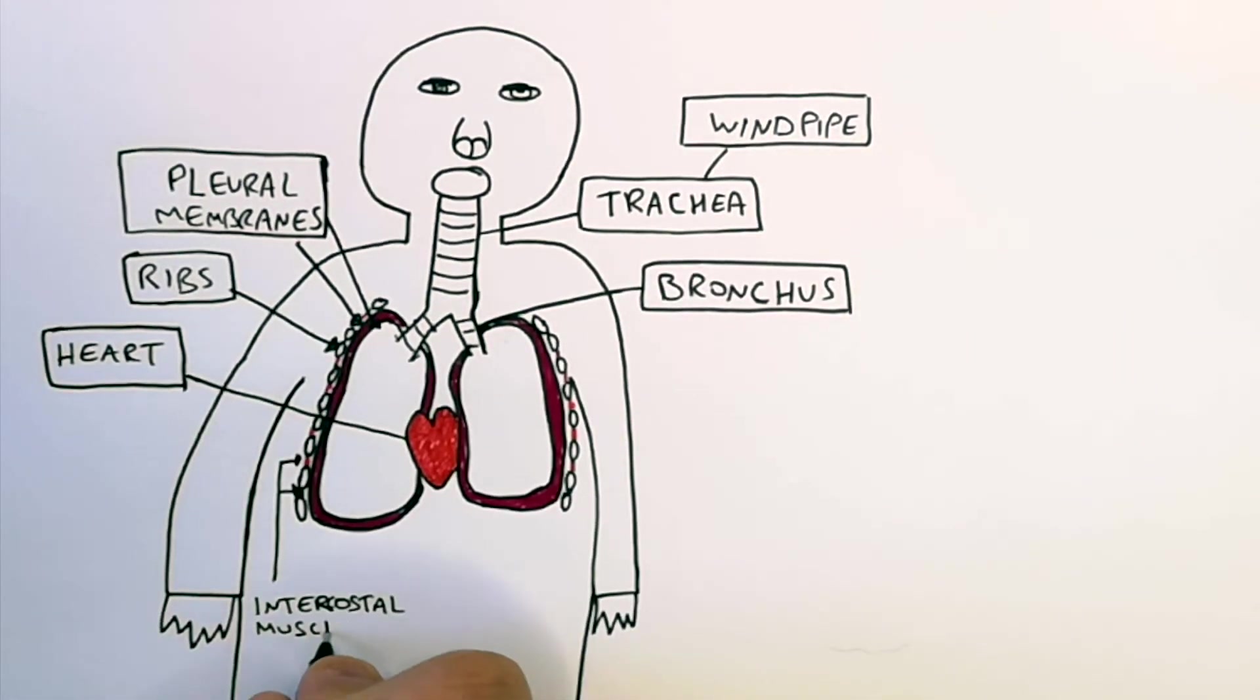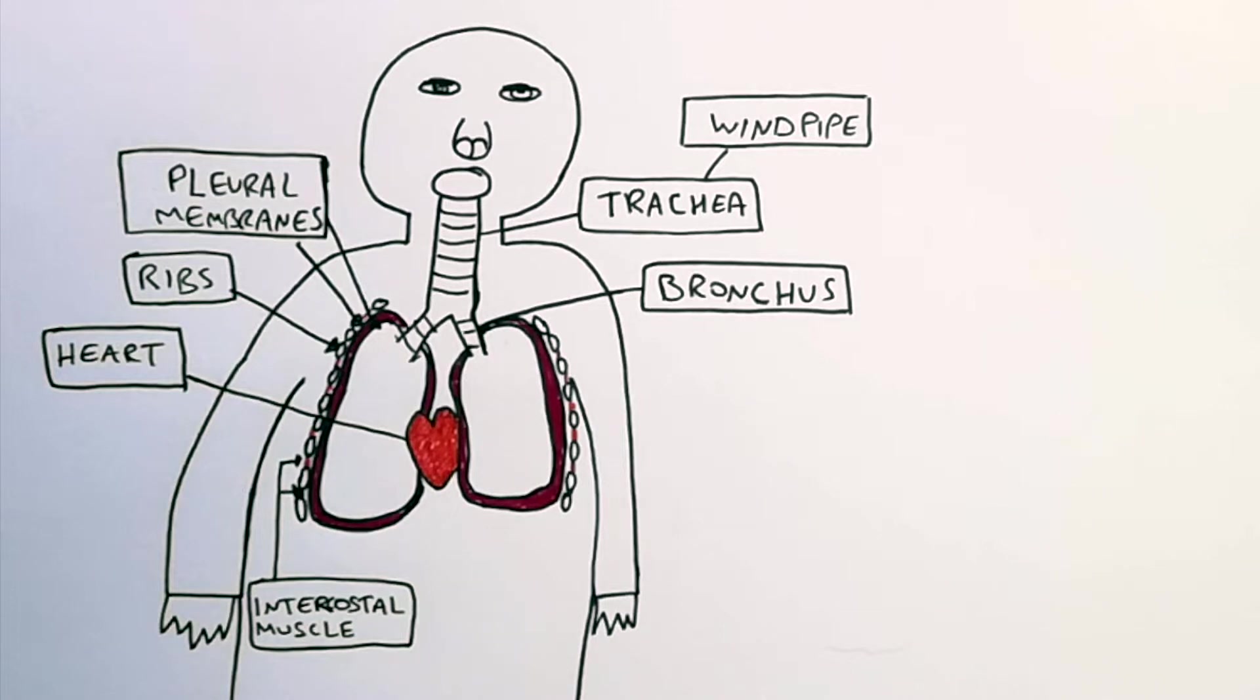Intercostal muscles contract and relax to allow our ribcage to move up and out when we breathe in and down and in when we breathe out.